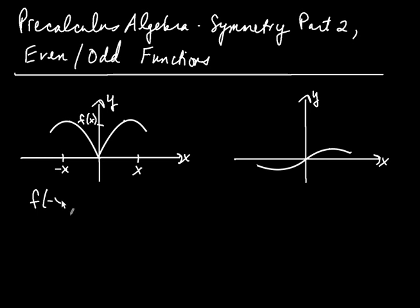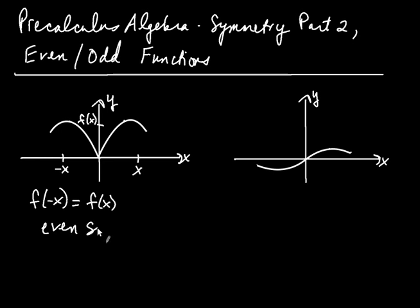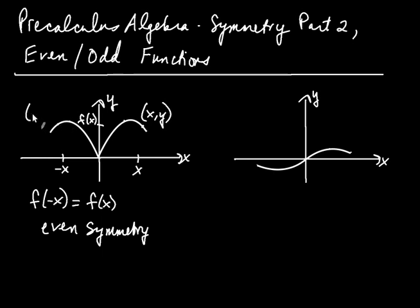We write it like this: f at negative x — the output at negative x — is the same as the output at just x. When a function has that property, that when you replace x with negative x the function is unchanged, we say that function has even symmetry. In context of the previous video, if the point (x, y) is on your graph, then so is the point (negative x, y).